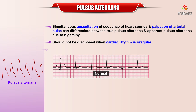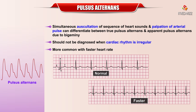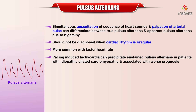Pulsus alternans is more common with faster heart rates. Pacing-induced tachycardia can precipitate sustained pulsus alternans in patients with idiopathic dilated cardiomyopathy, and is associated with worse prognosis.